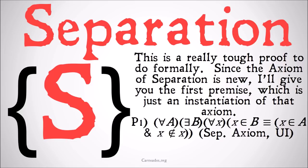For all a, there exists a b such that for all x: x is a member of b if and only if x is a member of a and x is not a member of itself. Remember, until we've proven that not all sets are classes, we can interchangeably instantiate classes into x.